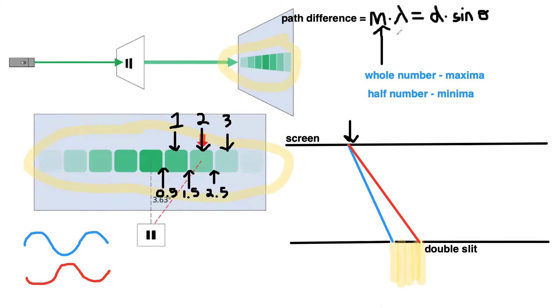So that path difference, if it's a whole number multiple, that's what's leading to our bright patches, since our waves are in phase and we get constructive interference. Whereas if we have half number multiples of the wavelength, that's giving us these dark bands or minima, because when those waves arrive, they are out of phase by half a wavelength and therefore they destructively interfere. So we're now going to practice using this equation to find different things to do with our diffraction pattern.